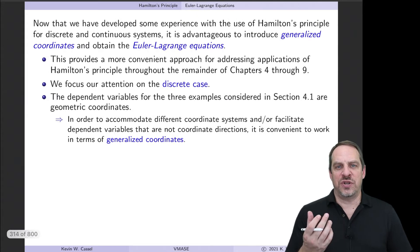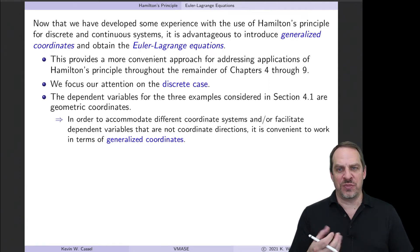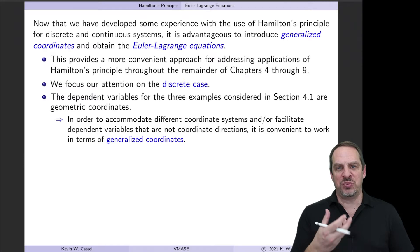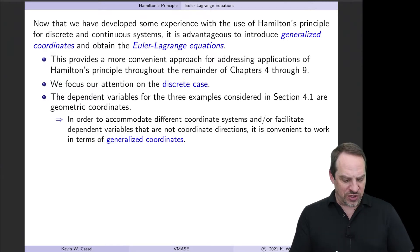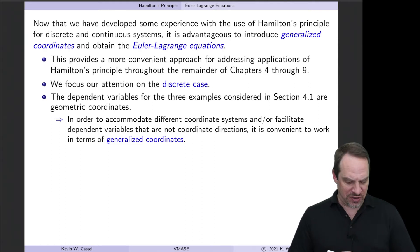In the examples we've done so far using Hamilton's Principle, both for discrete and continuous systems, the dependent variables — the degrees of freedom — have been positions, angles, or displacements. We'd like to have generalized coordinates as placeholders for these dependent variables, which will give us the Euler-Lagrange equations. We can then use the Euler-Lagrange equations directly, without having to take the variation of the integral of the Lagrangian and set it equal to zero.